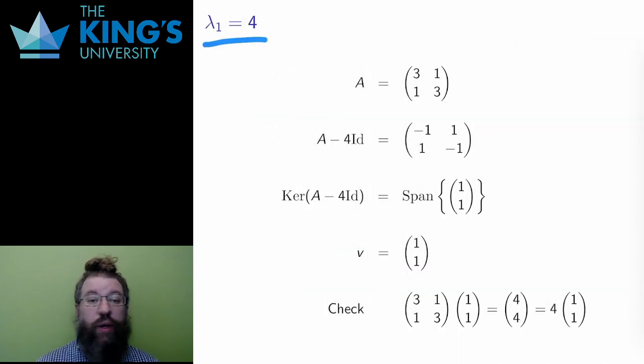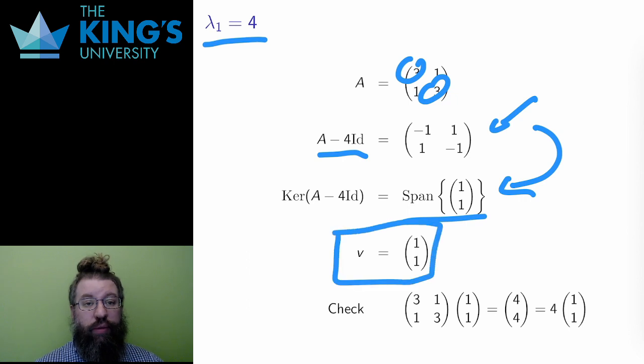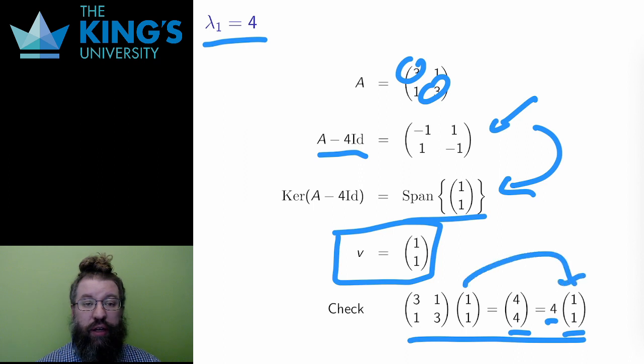But I have two eigenvalues, so I need to do this process twice. Here is the same process for the second eigenvalue, 4. I calculate A minus 4 identity, which is subtracting 4 from each diagonal entry. I calculate the kernel of this matrix. Again, steps for the kernel calculation are not shown. Then I choose an eigenvector from the span, and I can check that this is an eigenvector by again doing the matrix action. 1, 1 is sent to 4, 4, which is exactly 4 times the original vector. This is an eigenvector with eigenvalue 4.